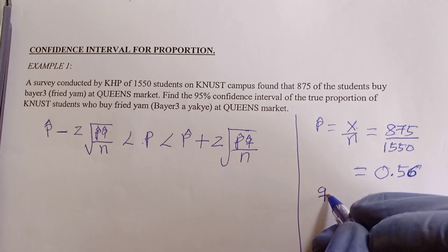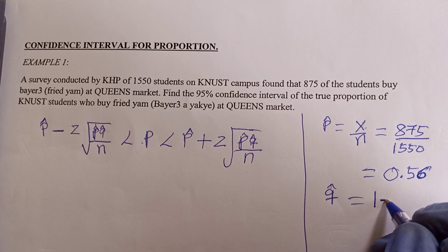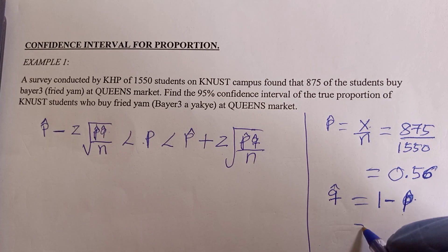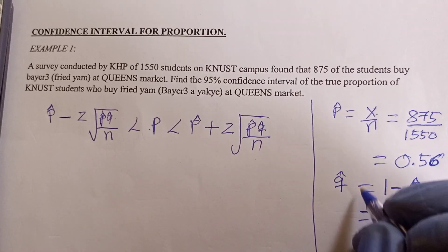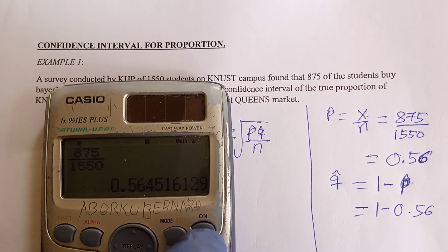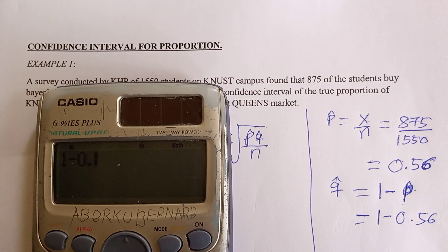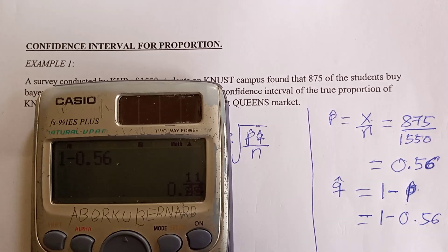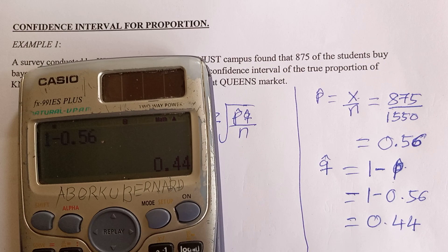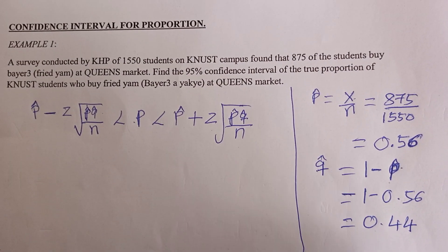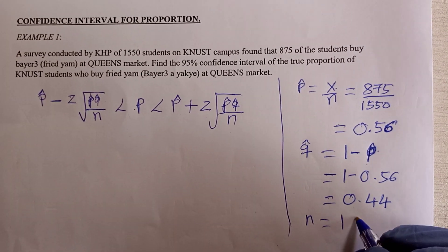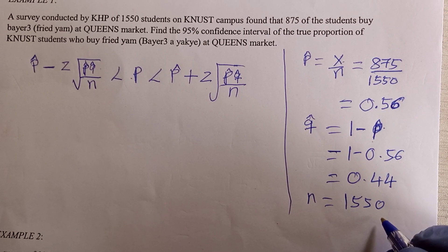To get q̂, q̂ equals 1 minus p̂, just like probability of failure. So 1 minus 0.56 gives you 0.44. That's q̂ equals 0.44. And our n is 1550, as given in the question.